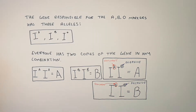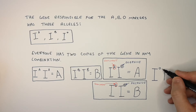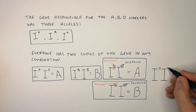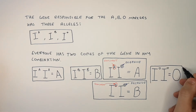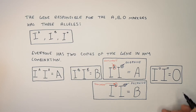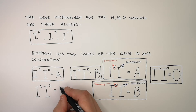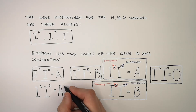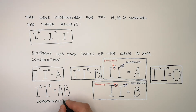If someone is IO, IO, that means they have two recessive alleles, which means the person will have the phenotype blood group O. IO, IO are the same allele, so this person is homozygous. If someone is IA, IB, then you have two dominant alleles that are both going to be expressed. This is co-dominance, where two alleles are expressed at the same time to give a phenotype of blood group AB.